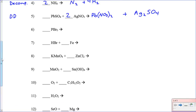Problem six: PBr₃ — only one reactant, so it's a decomposition reaction. It's going to break into its elements. Phosphorus is not diatomic, so it's just P. Bromine is diatomic, so it's Br₂. To balance, put a 2 in front of PBr₃ and a 3 in front of Br₂ — that balances the bromines. Then put a 2 in front of P to balance the phosphorus.